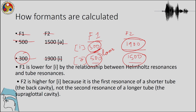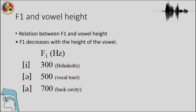The reason F1 is very low for a high front vowel like E is because of the complicated relationship between Helmholtz resonances and tube resonances. There is a systematic relation: F1 decreases with the height of the vowel. Because of the Helmholtz resonator, E always has a much lower F1 than the schwa, and the back cavity is responsible for the higher F1 for the vowel A.